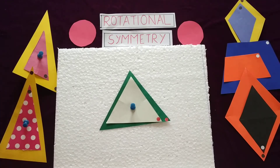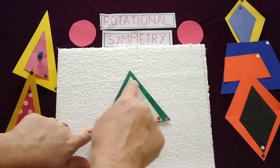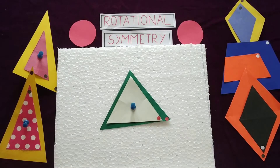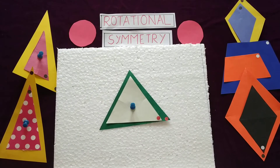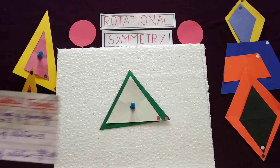Now the next one is how to find the angle of rotation. Around a point we know that we have 360 degrees. So 360 degrees divided by 3 — why 3? Because the order of rotation is 3 for an equilateral triangle. So 360 degrees divided by 3 will give you 120 degrees. For an equilateral triangle, the angle of rotation is 120 degrees.